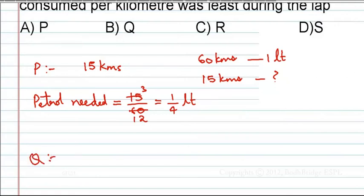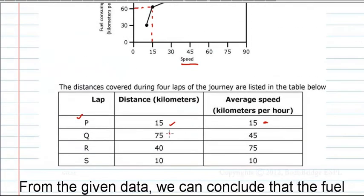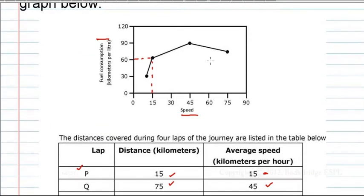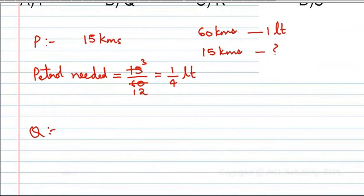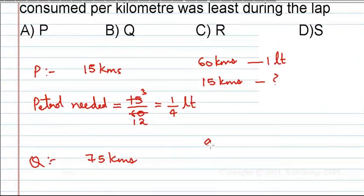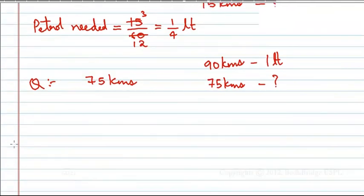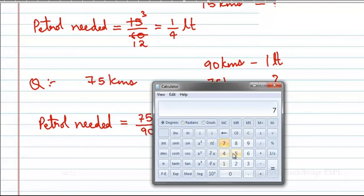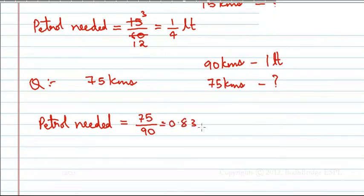For lap Q, the motorcycle travels 75 kilometers at an average speed of 45 kilometers per hour. At 45 kilometers per hour, reading from the graph, he gets 90 kilometers per liter. For 75 kilometers, the petrol needed is 75 divided by 90, which equals approximately 0.83 liters of petrol.